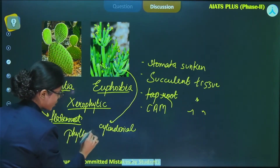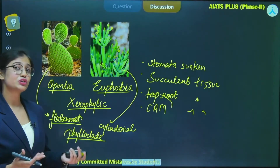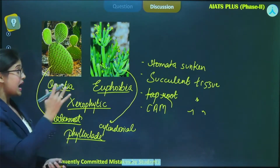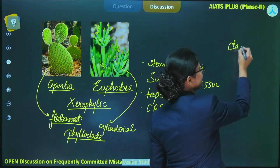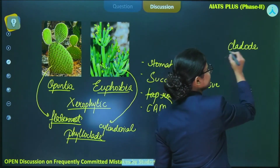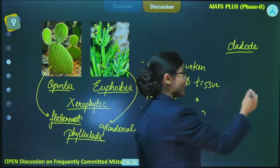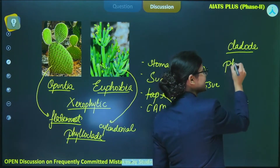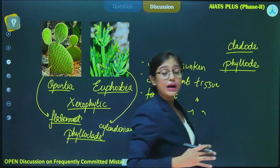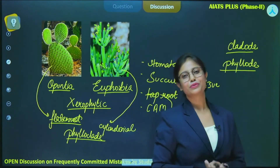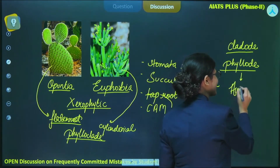This term phylloclad is not given in NCERT, but in previous years NEET has asked the question: what do you understand by phylloclad? Along with this term, one more term is also asked — cladode. Cladode is also the modification of stem into a structure which can perform photosynthesis. One more term asked is phyllode — phyllode is the modification of leaf where the petiole gets flattened and performs the function of photosynthesis. For example, in Australian Acacia.